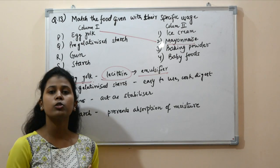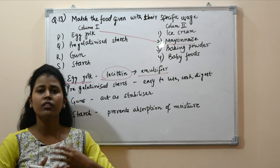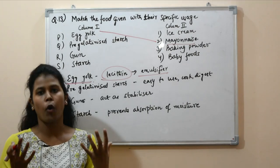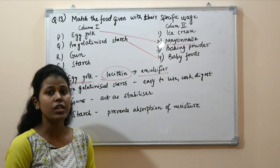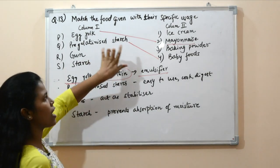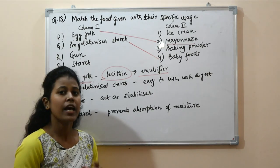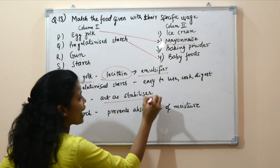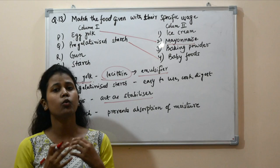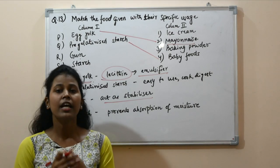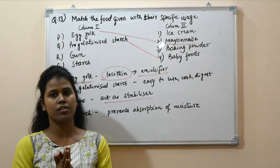Next is pre-gelatinized starch — starch that has already been gelatinized, dried, and converted into powder or granular form. Pre-gelatinized starches are used in soups, ready-to-eat fruit products, and baby foods. They are convenient, can be cooked by simply adding water, and reach the consistency of a normal cooked product. They are also very easy to digest, making them ideal for baby foods.